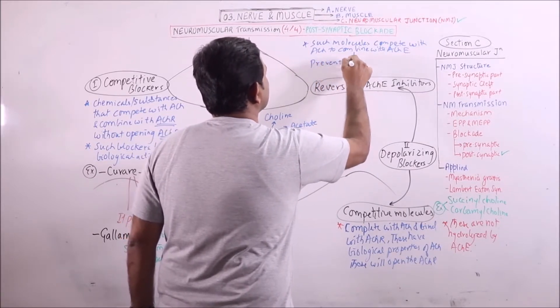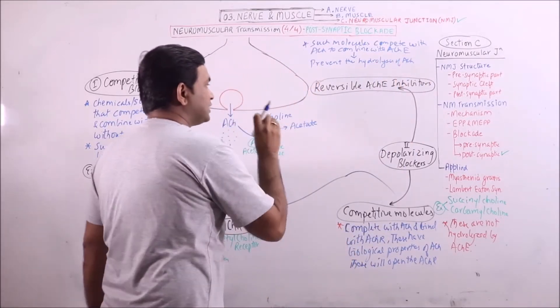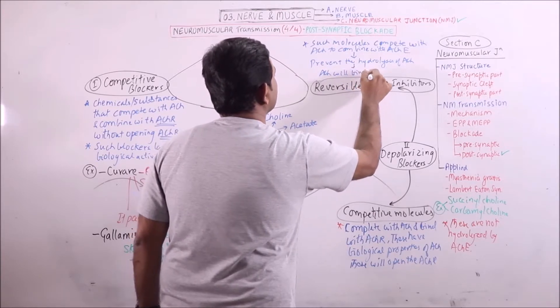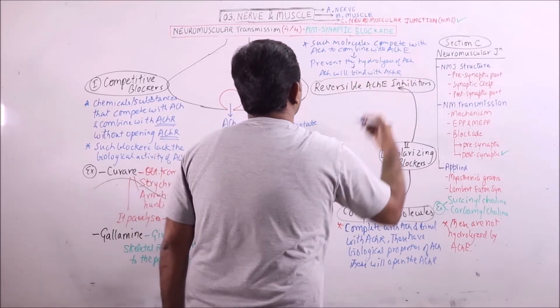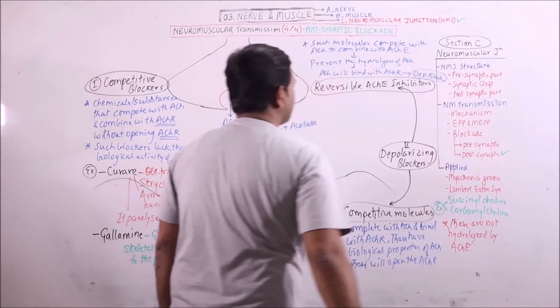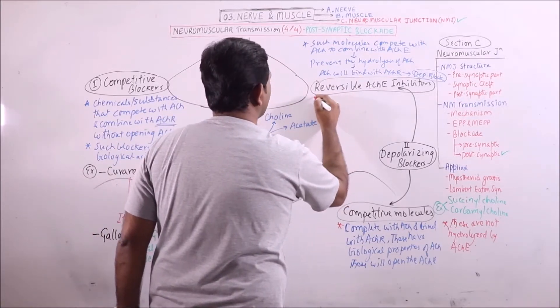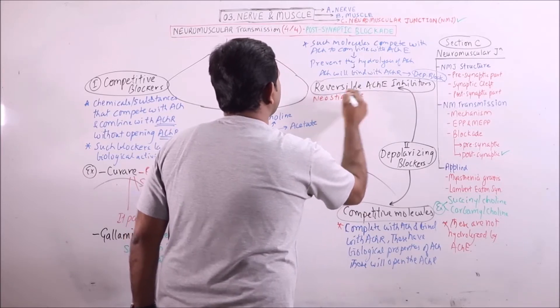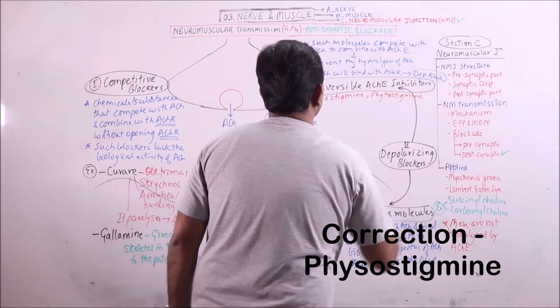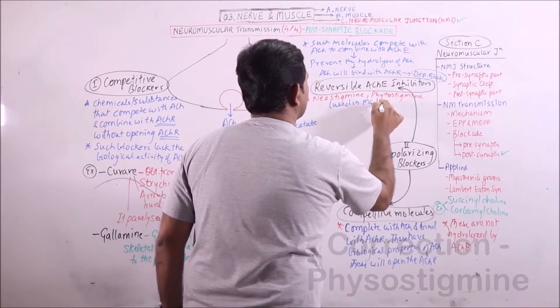This will prevent the hydrolysis of acetylcholine. Because of which, acetylcholine will remain in the synaptic cleft and ACH will bind with ACHR, producing depolarization block. Examples of such inhibitors are neostigmine and physostigmine, used in myasthenia gravis for improvement.